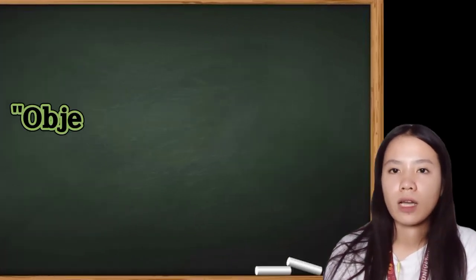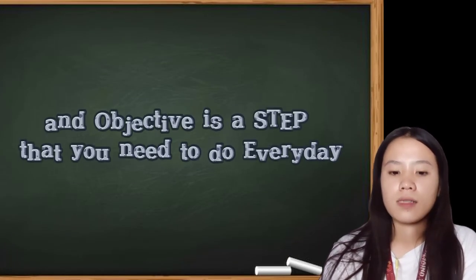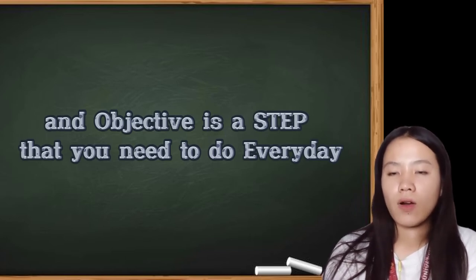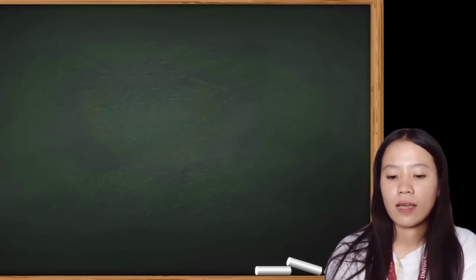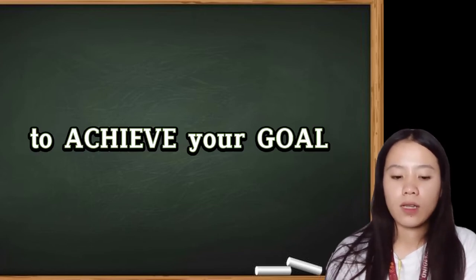What is objective? Objective is a process to achieve your goals. It is a step that you need to do every day or attain in your everyday life to achieve your goal. For example, your goal is to have a fit and healthy body, so you need to exercise and eat healthy foods to achieve the body that you desire.